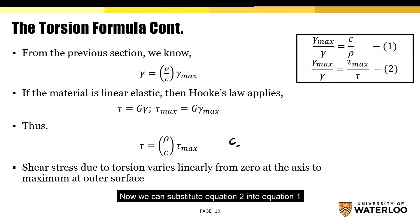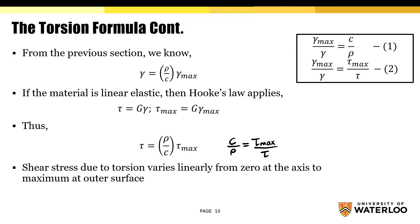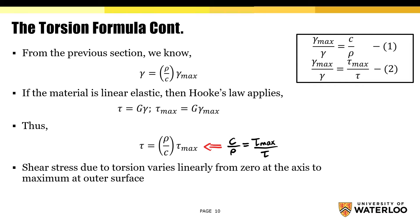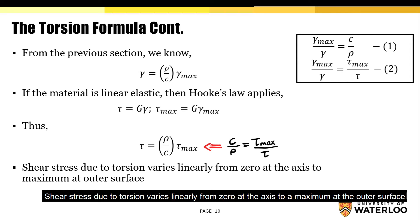Now we can substitute equation 2 into equation 1. If we isolate for shear stress, we'll end up with the formula that's used to determine the shear stress at any point along the row. Just as shear strain, shear stress due to torsion varies linearly from 0 at the axis to a maximum at the outer surface.